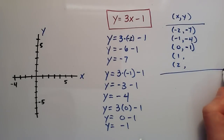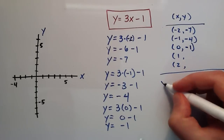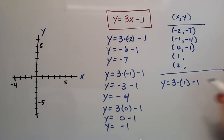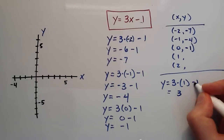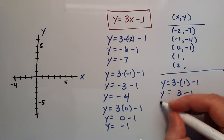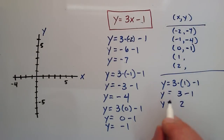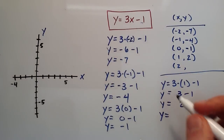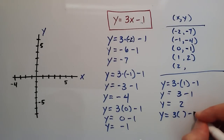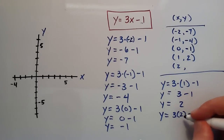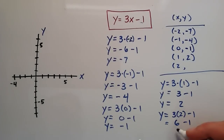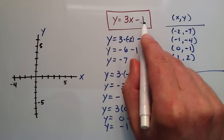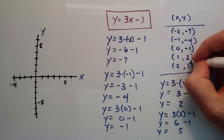For x equals 1: y equals 3 times 1, minus 1. 3 times 1 is 3, and 3 minus 1 is 2. So when x is 1, the corresponding y value is 2. For x equals 2: y equals 3 times 2, minus 1. 3 times 2 is 6, and 6 minus 1 is 5. So when x is 2, the corresponding y value is 5.